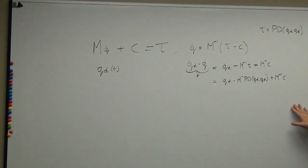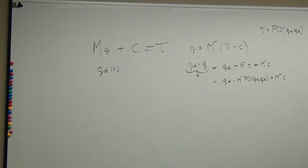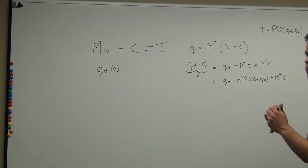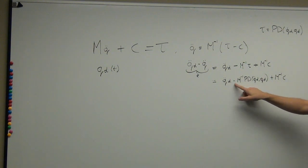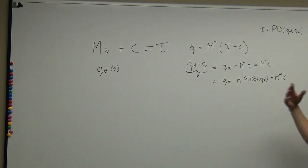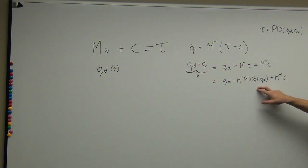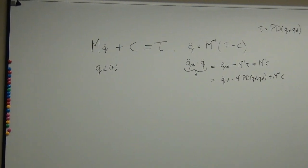Looking at these error dynamics: if you have a desired acceleration according to your trajectory, you can't react to it immediately. The Q̈_desired term makes the error grow, and only later is it corrected by the PD term — but first an error must appear before it gets corrected. Additionally, the M⁻¹C term captures gravitational and Coriolis effects, and nothing is compensating for those except accumulated error. So let's try to find a better solution than plain PD control.